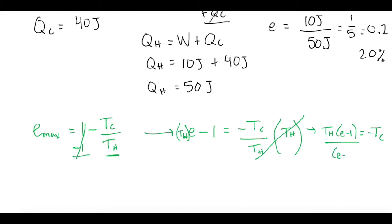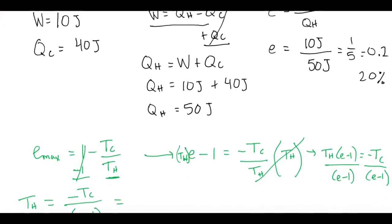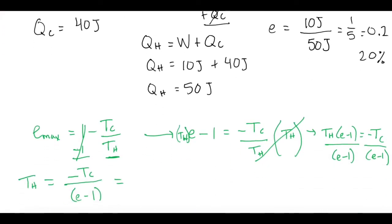Now we'll divide both sides of the equation by E minus 1. So now rewriting it over here, TH is equal to negative TC over E minus 1. So when we plug in our values, they tell us that the cold temperature is 30 degrees Celsius, so 30 plus 273 is 303.